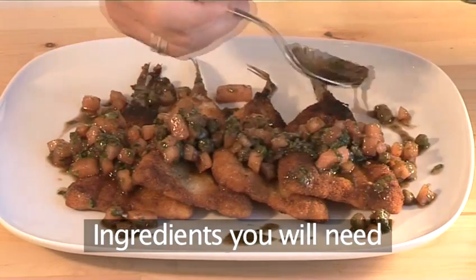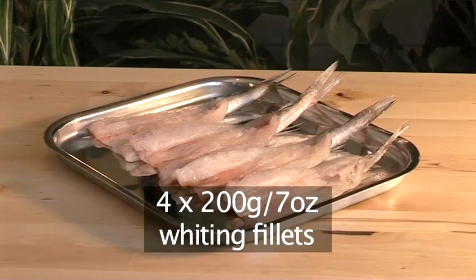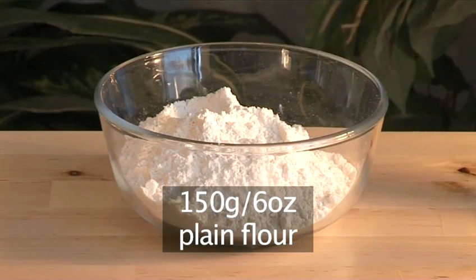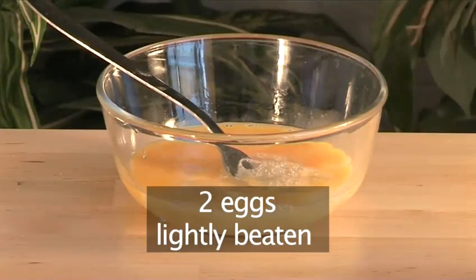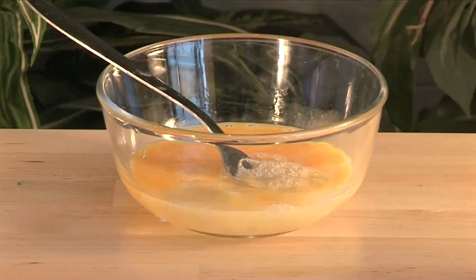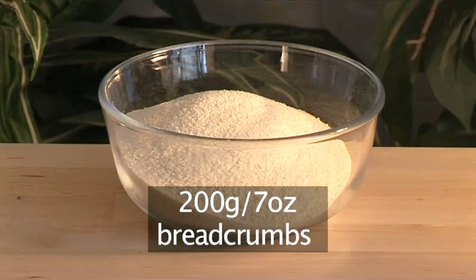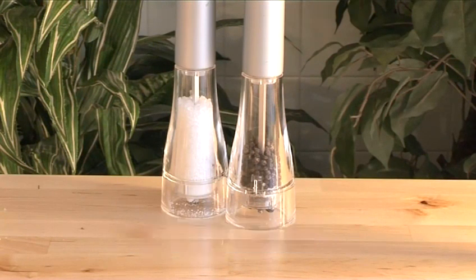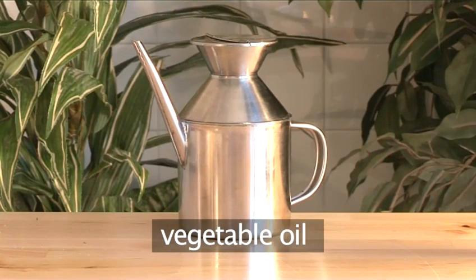You will need the following ingredients to serve four people. Four 200 gram whiting fillets, 150 grams of plain flour, two eggs lightly beaten, 200 grams of breadcrumbs, salt and pepper, and vegetable oil.